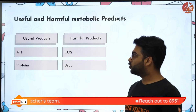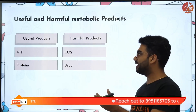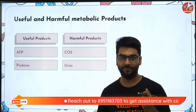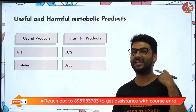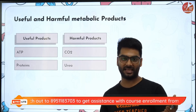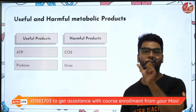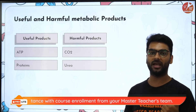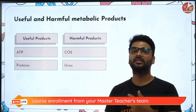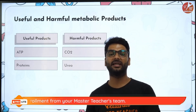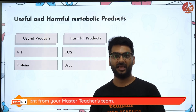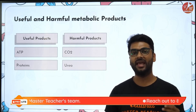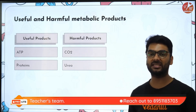The useful products in the body are ATP and proteins, and the harmful products are carbon dioxide and urea. This carbon dioxide is exhaled out during exhalation, and that is also a type of excretion. The excretory organs in your body are the skin, the lungs, as well as the kidneys. Lungs give out carbon dioxide, kidneys give out urine, and skin gives out sweat and oil.